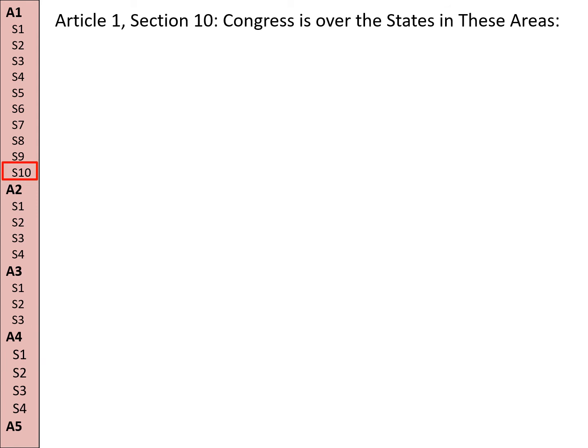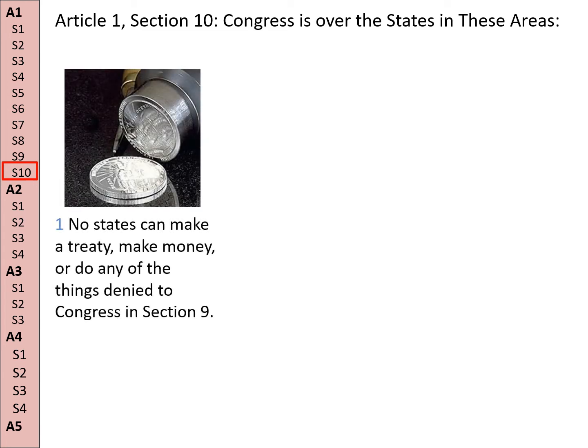Finally, Section 10, the last section of Article 1 covering the legislature: Congress is over the states in these areas. No state shall make a treaty, make money, or do any of the things that are denied to Congress — so if Congress can't do it, neither can the states.